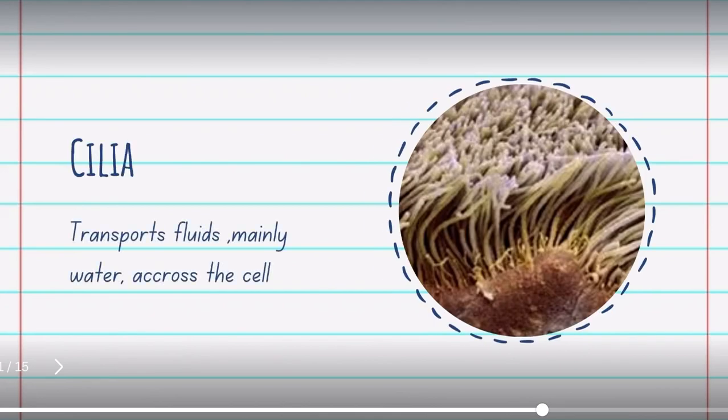Cilia transports fluids, mainly water, across the cell. But on our right we'll see what cilia that is located in the lungs that is made to help move mucus around so it doesn't block our lungs.